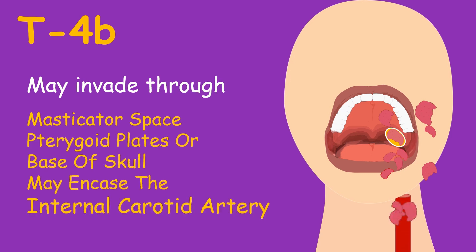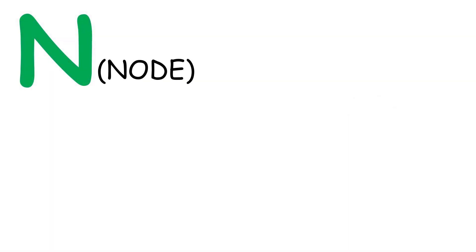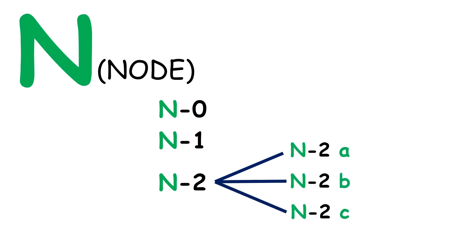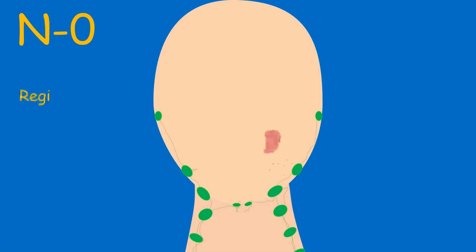N in TNM stands for regional lymph nodes. It's categorized as N0, N1, N2, which is further subdivided into 2A, 2B, and 2C, and lastly we have N3. In N0, no regional lymph node metastasis is seen.